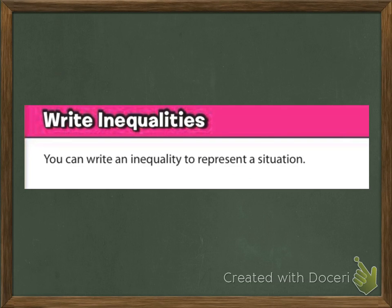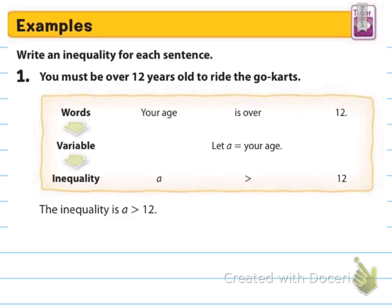We're going to write inequalities. You can write an inequality to represent a situation, just like those examples. It says write an inequality for each sentence. Number 1: you must be over 12 years old to ride the go-karts. Think about it — 12 is in the middle, 11 is one less, and 13 is one more. You must be over 12 years old. Could you be 11? No. Could you be 12? No, you have to be over 12. Could you be 13? Is 13 over 12? Yes.